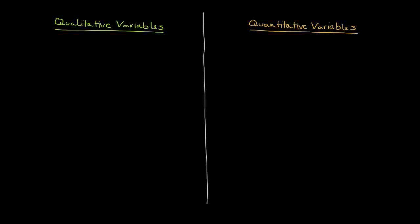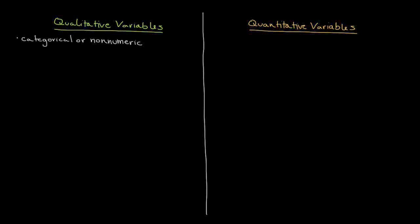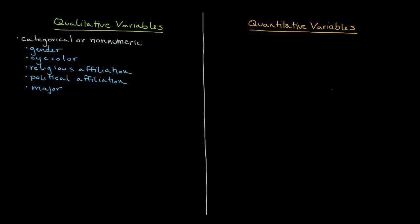There are two basic types of variables in statistics. The first type is known as qualitative variables, and the second type is known as quantitative variables. A qualitative variable is used to describe something that is either categorical or non-numeric. A good way to think about qualitative variables is the first four letters of the word 'qual,' standing for quality — referring to the actual type of something, as opposed to how many or an exact numerical value. Common qualitative variables include things like eye color, gender, religious affiliation, political organizations, and even your major. The commonality here is that they are non-numeric in nature; they describe a type of something, not an amount.